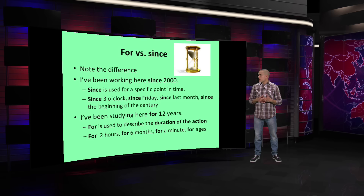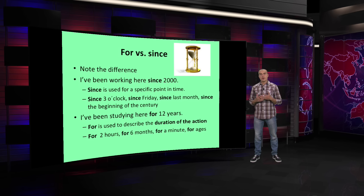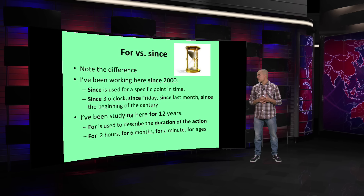Tenemos acá: for two hours — por dos horas; for six months — por seis meses; for a minute; for ages — por eras. 'I have been waiting for you for ages' means you were waiting for a long time. With SINCE: since three o'clock — desde las tres en punto; since Friday — desde el viernes; since last month — desde el mes pasado; since the beginning of the century — desde el comienzo del siglo.